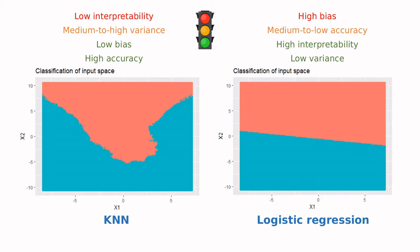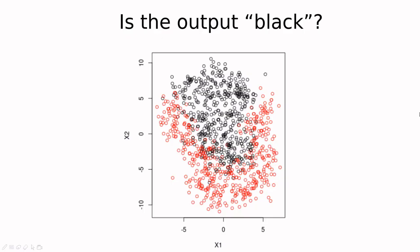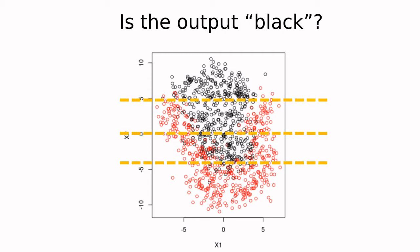Today we're going to cover decision trees, which try to balance these two approaches. Let me show you the main idea with this dataset. Imagine you have a dataset and you want to classify the blacks and the reds, and you can only play with horizontal and vertical lines. Let's start with horizontal lines. Imagine you want to be as accurate as possible — you want to reduce false negatives and false positives. So you could draw, for instance, this line, or this one, or this one.